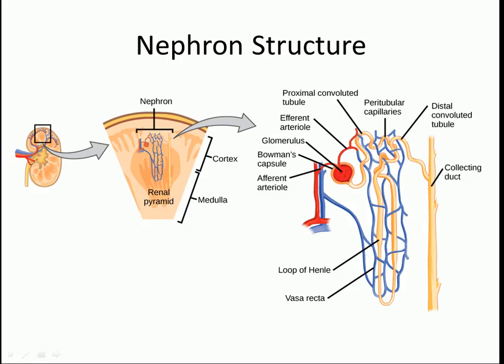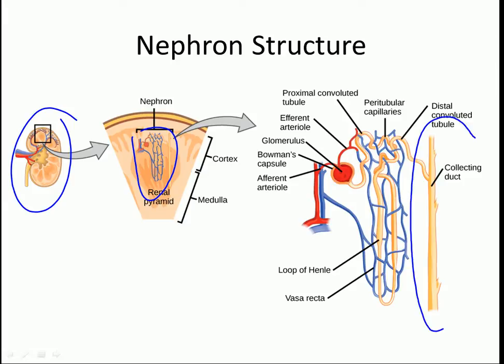If we go back to our kidney, zoomed in at the level of the nephron, it's here in the collecting duct where we're going to do the ultimate control of the amount of water we release versus the amount of water we retain. Whereas with the loop of Henle, part of it was permeable to water and part of it was impermeable to water.